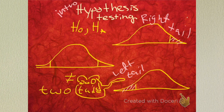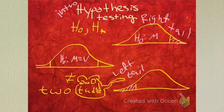Here our null, H-naught, says that mu is equal to some stated value. This one over here, our H-naught, says that mu is less than a value. Here our H-naught says that mu is greater than some value.